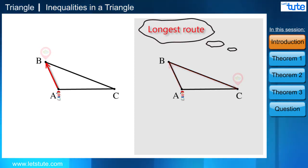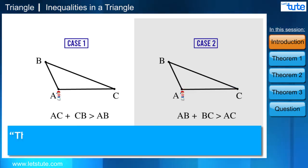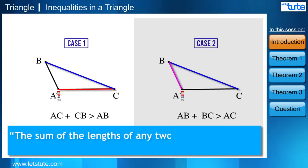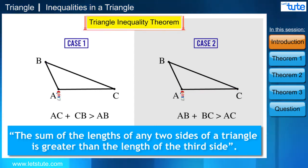Yes friends. So from the first case, we can say that in triangle ABC, route AC plus CB is greater than route AB. Similarly from the second case, route AB plus BC is greater than route AC. Therefore according to this, we can say that the sum of the lengths of any two sides of a triangle is greater than the length of the third side. This is a triangle inequality theorem.